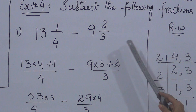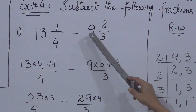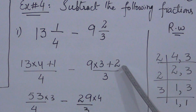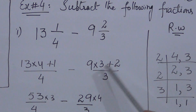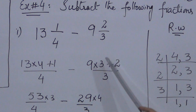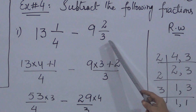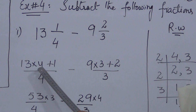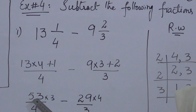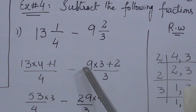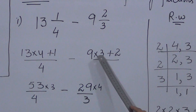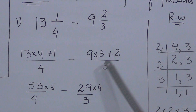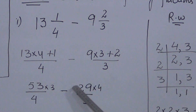For the first fraction: 13 multiplied by 4, plus numerator value 1. Denominator remains 4. So 13 × 4 = 52, plus 1 is 53 upon 4. For the second fraction: 9 multiplied by 3 plus numerator value 2. So 9 × 3 = 27, plus 2 is 29 upon 3. Now we have improper fractions: 53/4 and 29/3.